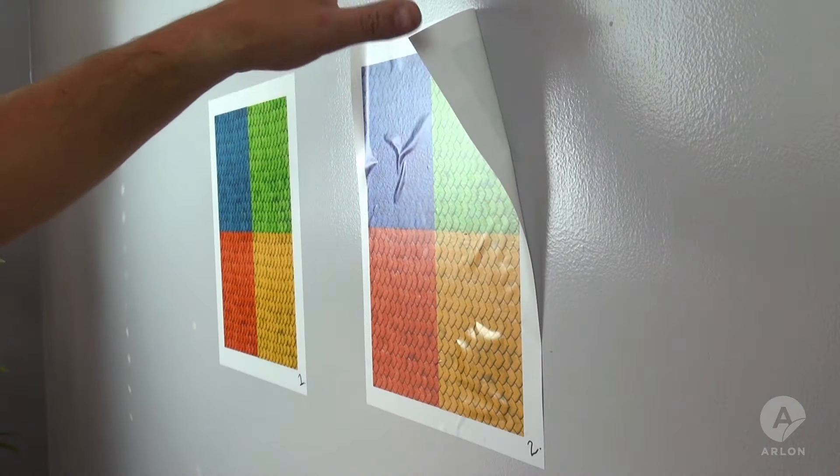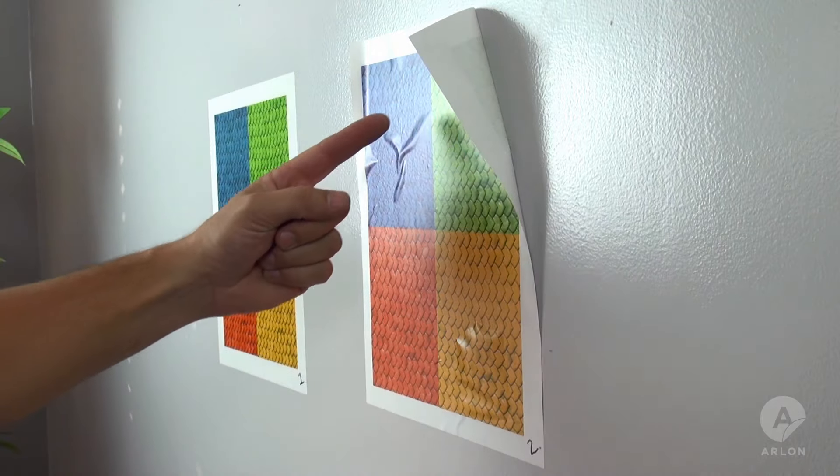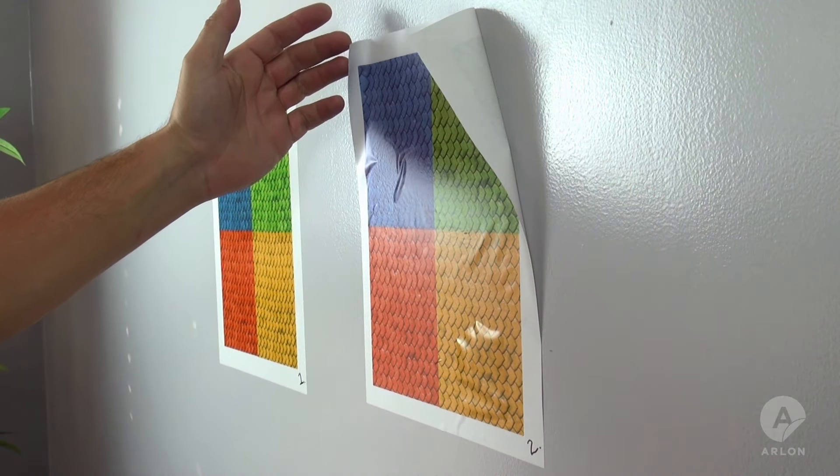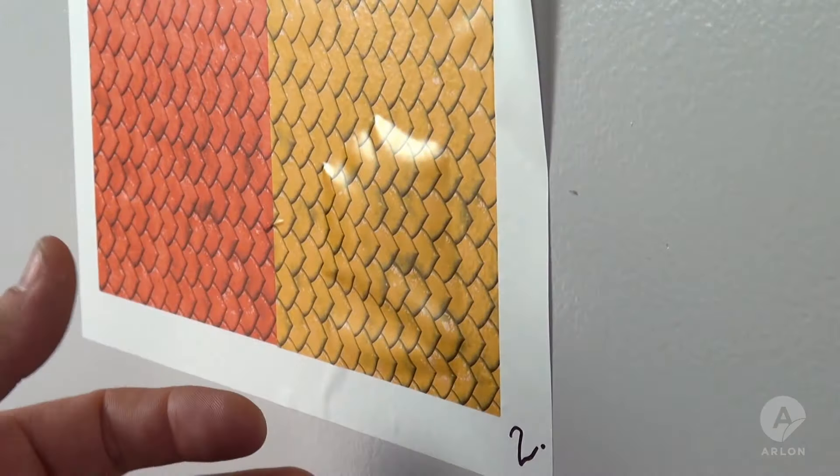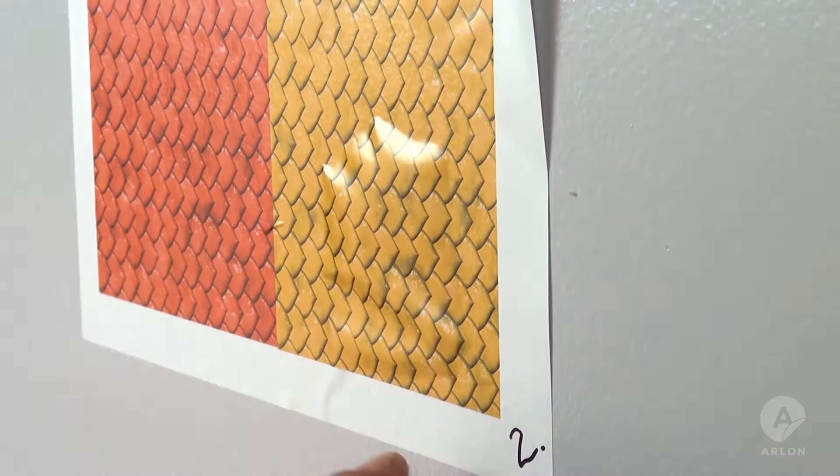Sample 2 has lifted in the corners and along the edges. Bubbles have formed here, and the bottom edge has lifted a little.